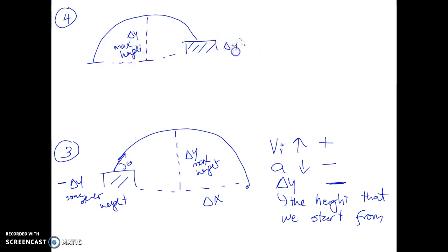This is delta y some other height that you're going to end up on. Again, your vi is going upward and positive, acceleration is going down and negative, and some other height is positive. This is the height you end up on—height you end up on is positive.